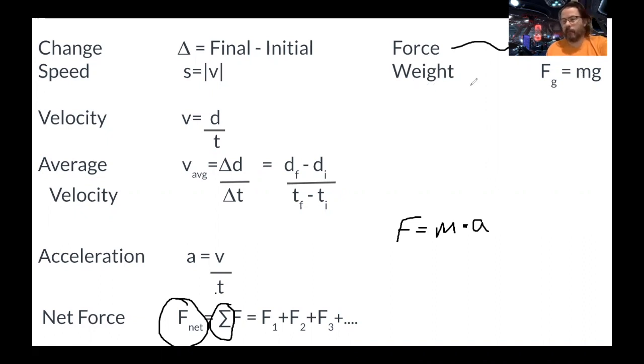Weight is a force. So the force due to gravity is mass times the acceleration due to gravity, which in your notes we have written down. And if you haven't, this would be a good place to write it as well. G equals a constant, it is unchanging on the earth, 9.8 meters per second squared.